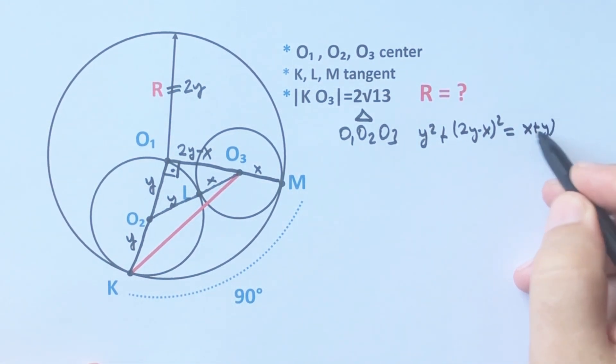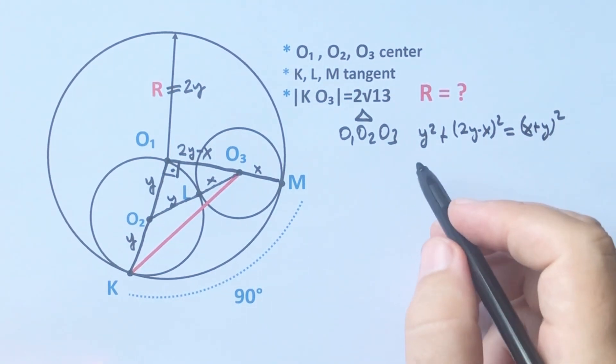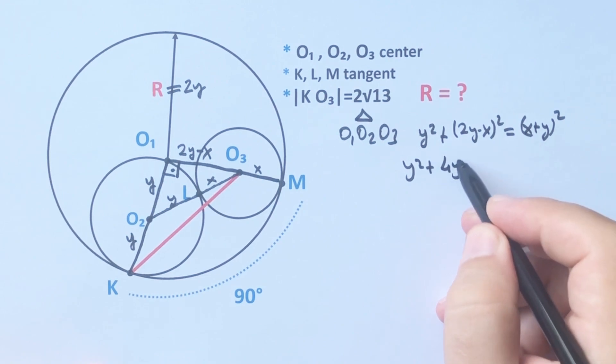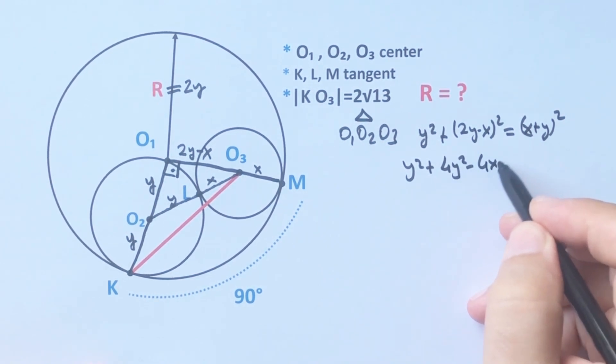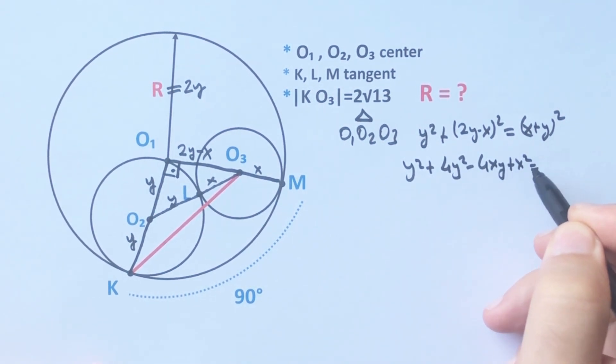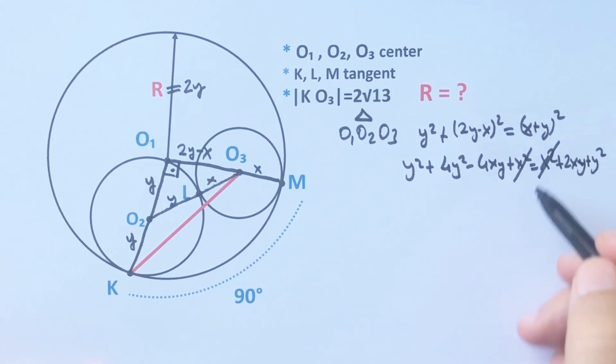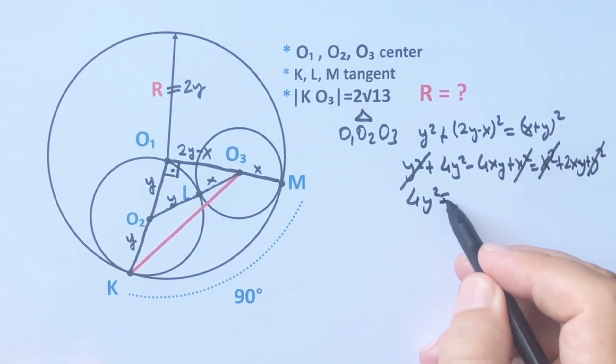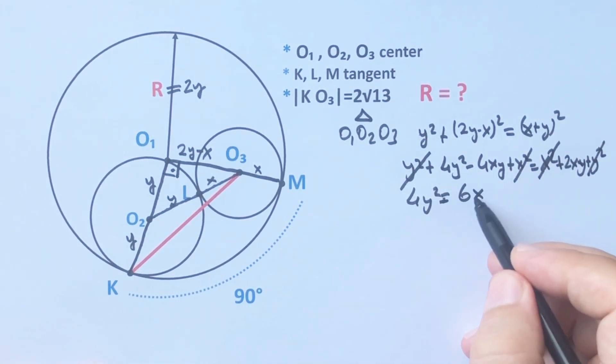(x plus y) whole squared. Therefore, y² plus 4y² minus 4xy plus x² equals x² plus 2xy plus y². Therefore, these cancel and these cancel as well. 4y² equals 6xy.